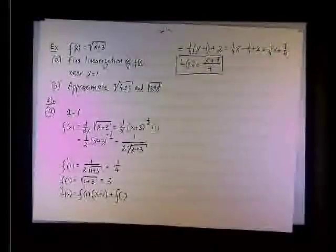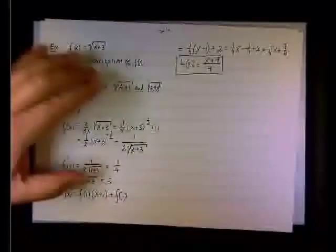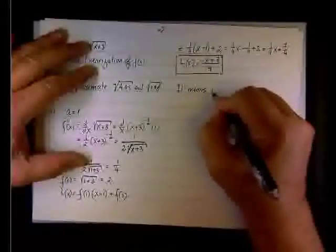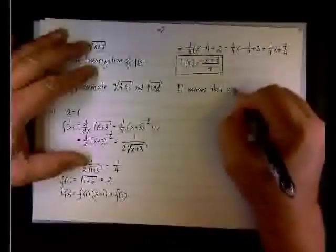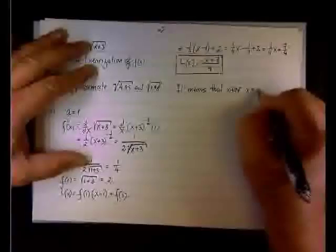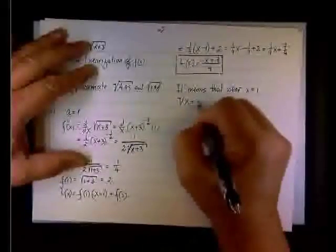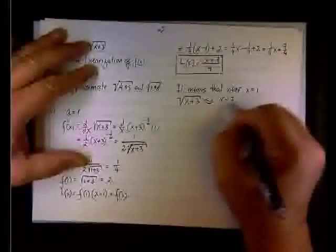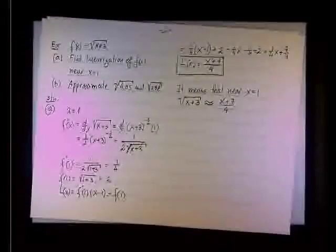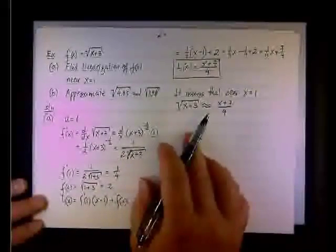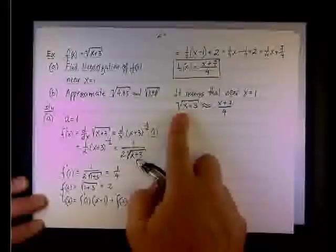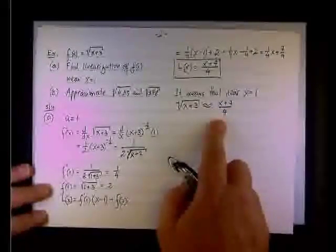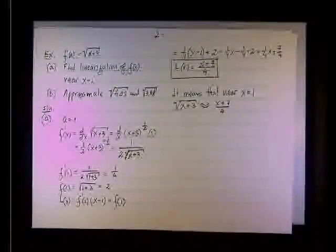Just to make sure that we understand what it means, it means that near x equals 1, the square root of x plus 3 can be substituted by (x plus 7) over 4. And that's why we like to do a linear approximation, because it is not that easy to calculate without a calculator the square root of x plus 3. It's really easy to calculate without a calculator x plus 7 over 4, that simple addition and division.